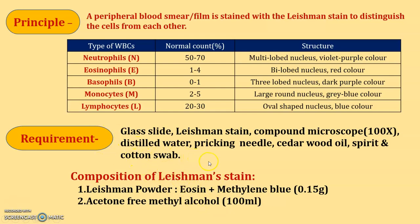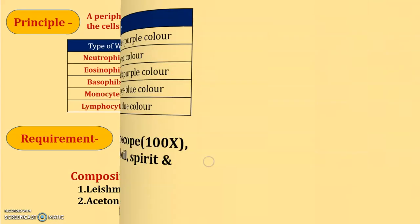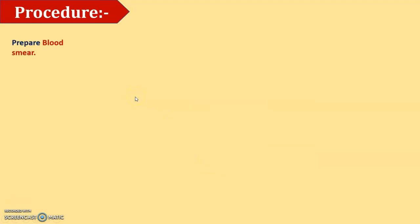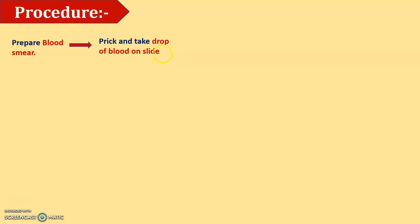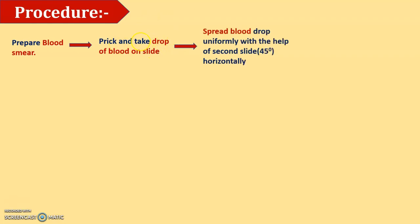Now let us discuss the procedure. First, we prepare a blood smear. Prick the finger with a pricking needle and take one drop of blood onto the glass slide at any corner. Then spread that blood drop uniformly with the help of another glass slide at an angle of 45 degrees, ensuring it is neither too thick nor too thin.